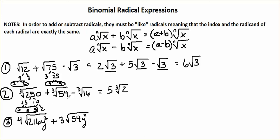Now let's simplify our next term, which is 6 times 9. 9 factors into 3 times 3, and 6 factors into 2 times 3. So we have a nice group of 3 right here. We'll pull that 3 out, and we have the cube root of 2 left.